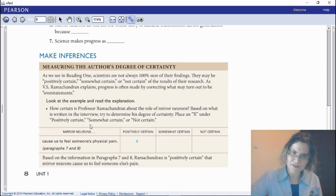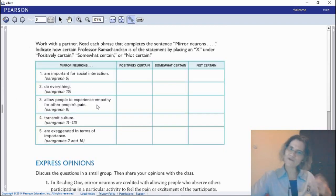If we go back into the text, we can see the mirror neurons cause us to feel someone's physical pain. He talked about that with a lot of certainty, so positively certain. You can see that based on paragraphs 7 and 8, he's positively certain that mirror neurons cause us to feel someone else's pain. So you can hear it from how they say things, how things are written, by the words and phrases they use. We can know whether that is very certain, somewhat certain, or not certain.